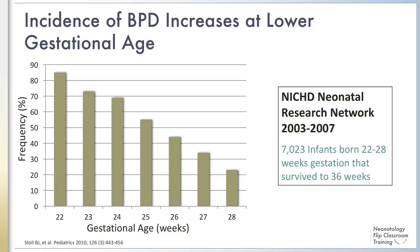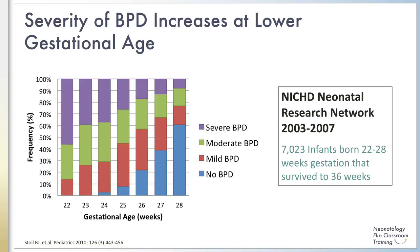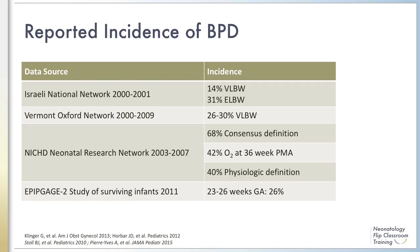Research from the NICHD Neonatal Research Network highlights how the incidence of BPD increases with decreases in gestational age. Similarly, this figure also from the NICHD Neonatal Research Network shows that the severity of BPD also increases with decreases in gestational age. While estimates vary depending on the applied definition and data source utilized, upwards of a quarter of infants with birth weight less than 1500 grams and one half of infants born less than 1000 grams are diagnosed with BPD.